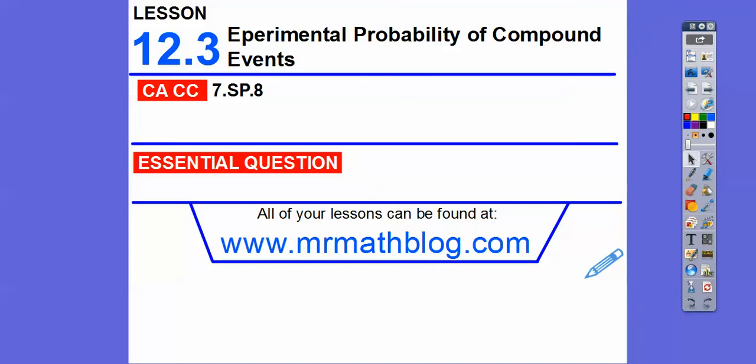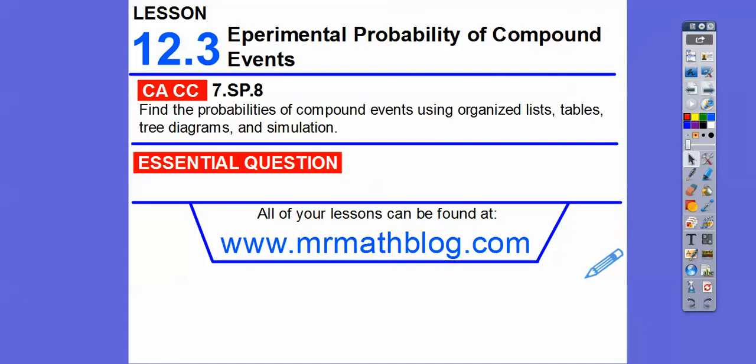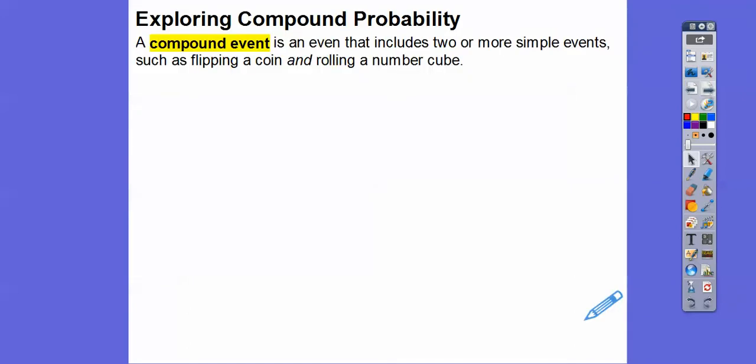Hey folks, this lesson is a fun lesson: Experimental Probability of Compound Events. That means two events happening at the same time. So there's our common core strand for our most grooviest math teachers. So how do we find the experimental probability of a compound event?